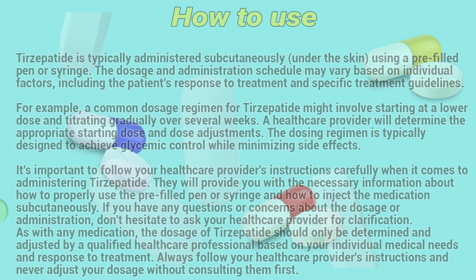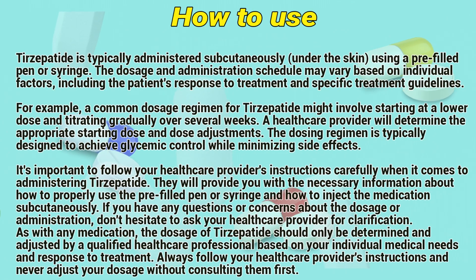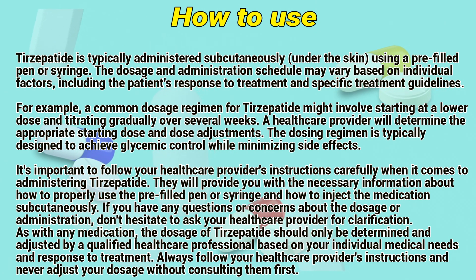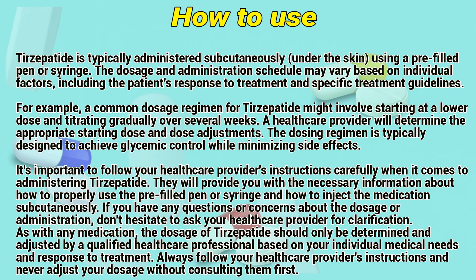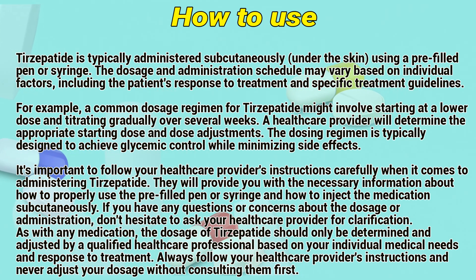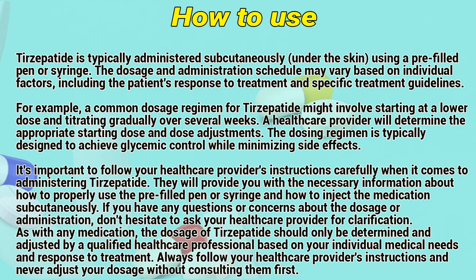How to use? Tirzepatide is typically administered subcutaneously under the skin using a pre-filled pen or syringe. The dosage and administration schedule may vary based on individual factors, including the patient's response to treatment and specific treatment guidelines. For example, a common dosage regimen might involve starting at a lower dose and titrating gradually over several weeks.